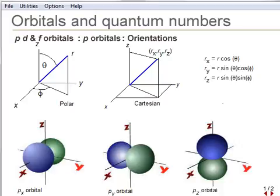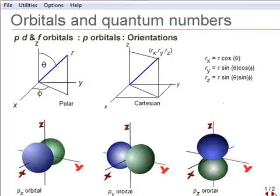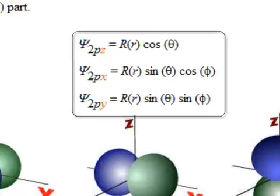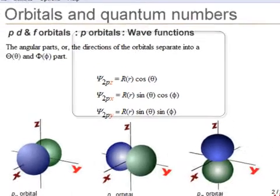Actually, P-orbitals should be labeled by the magnetic quantum number n for values of 1, 0, and minus 1, but we change to Cartesian coordinates and define the more commonly used Px, Py, and Pz orbitals.